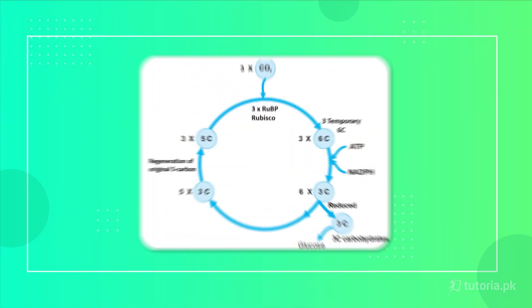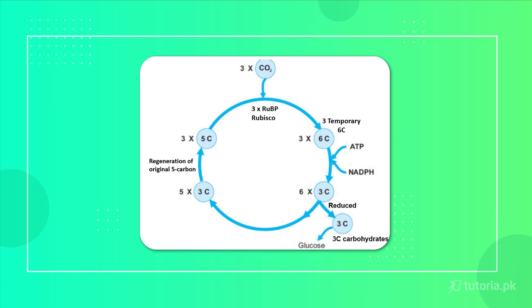In dark reactions, a 5-carbon compound reacts with carbon dioxide, forming a temporary 6-carbon compound. This splits into 3-carbon compounds, which are then reduced into 3-carbon carbohydrates, and from that we get glucose. The remaining carbon compounds are recycled and recombined to regenerate the 5-carbon compound, which then reacts with more carbon dioxide. This cycle keeps running, which is why we call it the Calvin cycle.